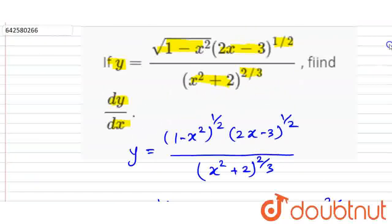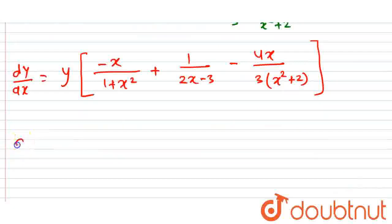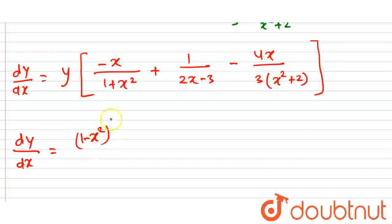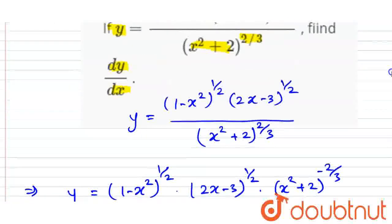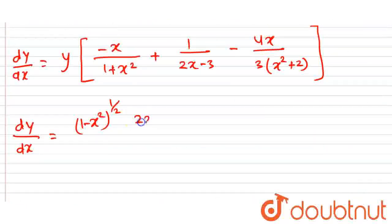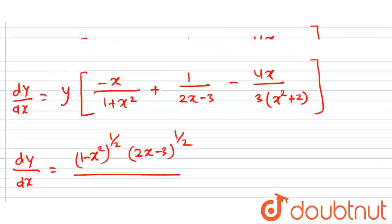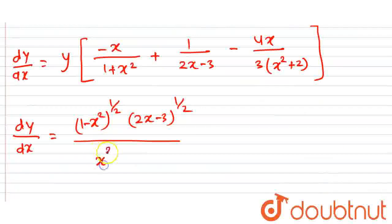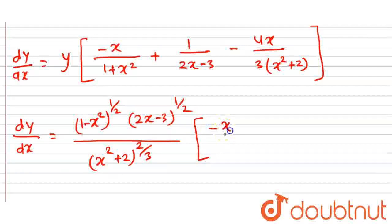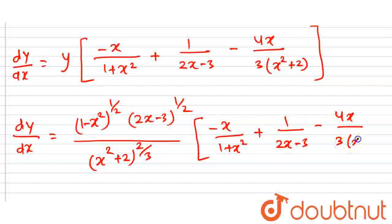Now, substituting back the value of y: dy by dx equals 1 minus x squared to the power 1 by 2, into 2x minus 3 to the power 1 by 2, divided by x squared plus 2 to the power 2 by 3, into minus x upon 1 minus x squared, plus 1 upon 2x minus 3, minus 4x upon 3 into x squared plus 2. This is our required answer.